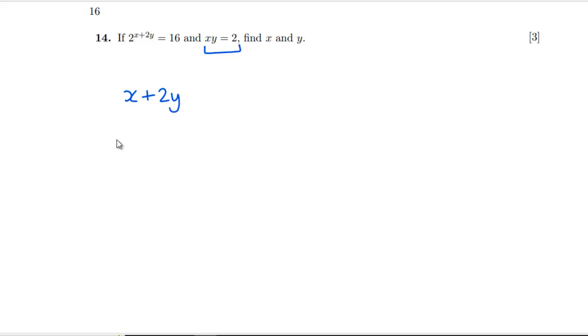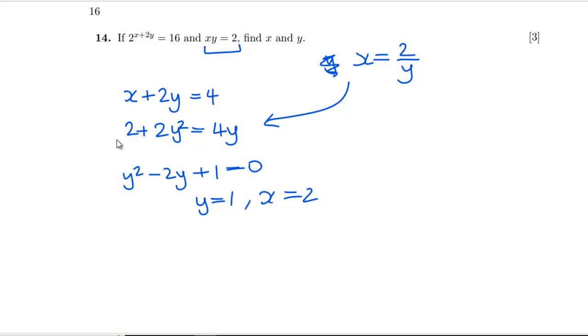We're going to have to have X plus 2Y is equal to 4, which means that we've got 2 plus 2Y squared is going to be equal to 4Y. X is equal to 2 over Y and then multiplying through by Y. So putting that in, we end up with this, which means we've got Y squared minus 2Y plus 1 is equal to 0 or Y is 1, X is 2. And I think we're only going to get one solution on that. Yeah, so that's going to be fine. Right, that was a quick three marks.